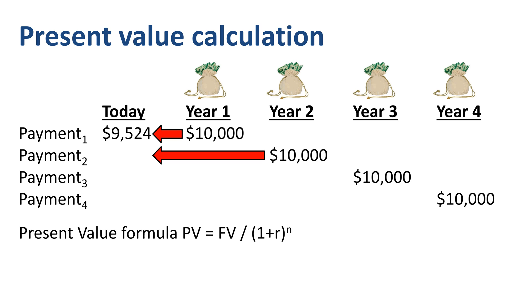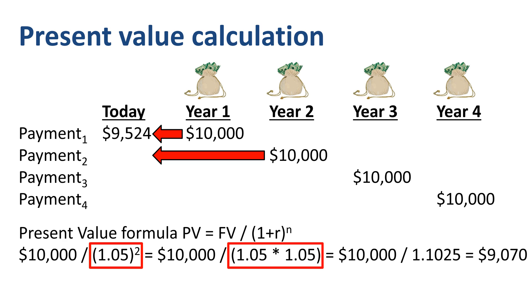The present value of the second payment is $10,000 divided by 1.05 to the power 2, which is the same as $10,000 divided by 1.05 times 1.05, which is $9,070.